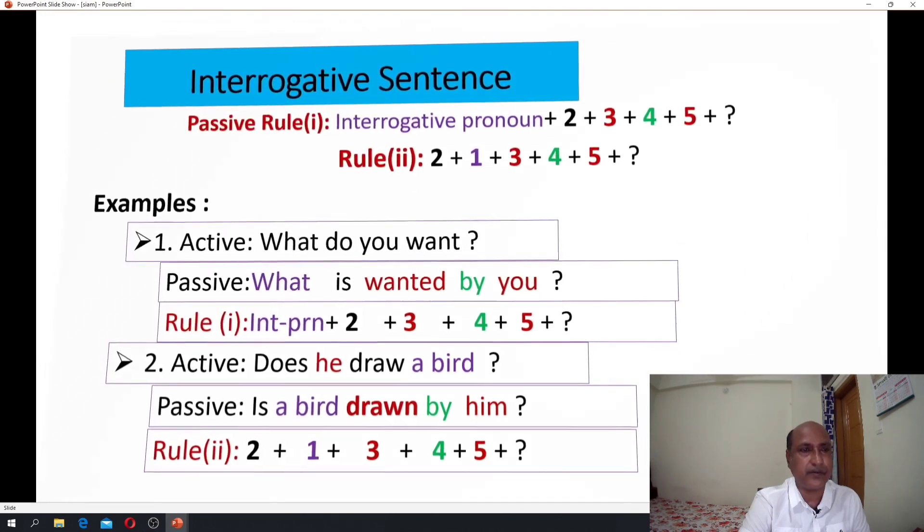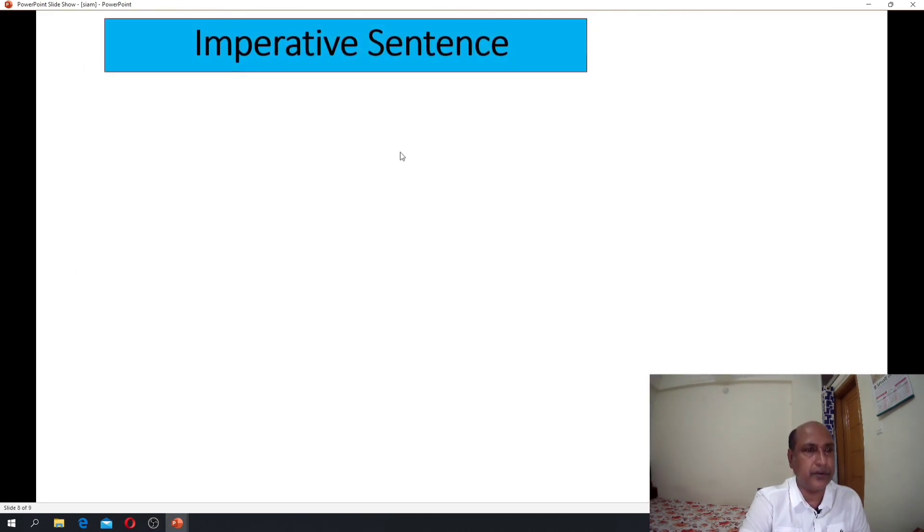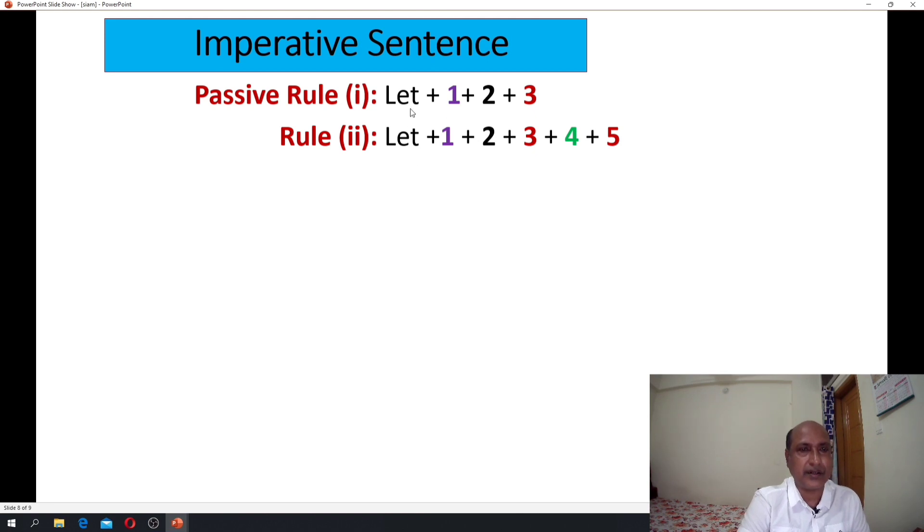Let's see the imperative sentence. The rule is: let plus one, two, three. For imperative sentence, the rule applies whenever the sentence starts with let.